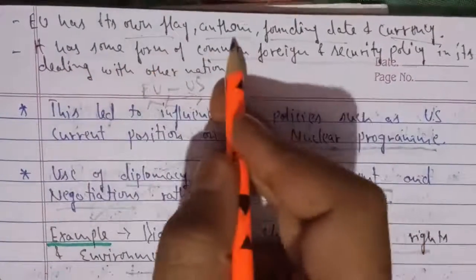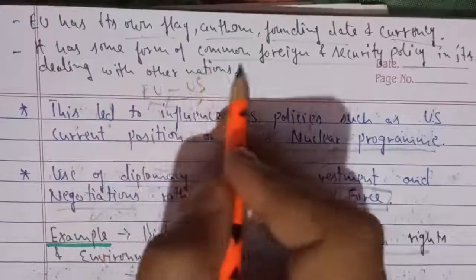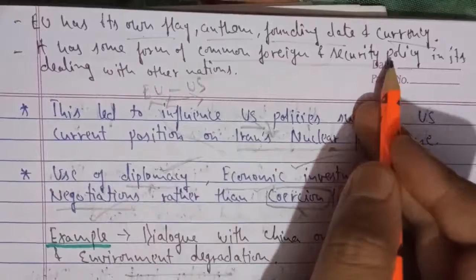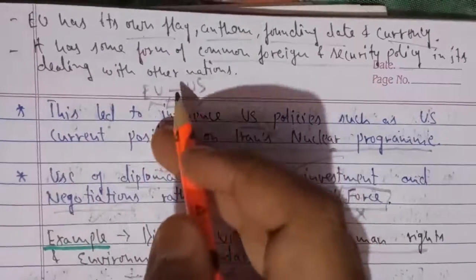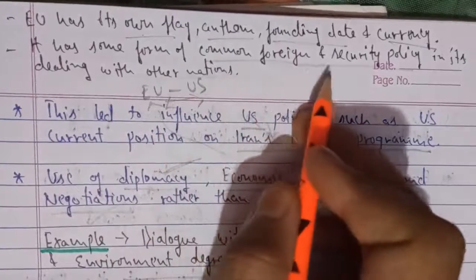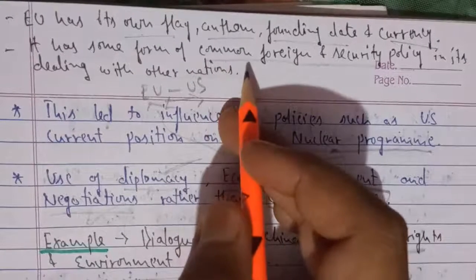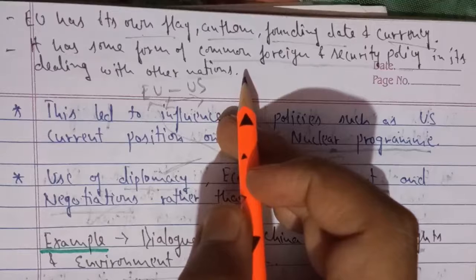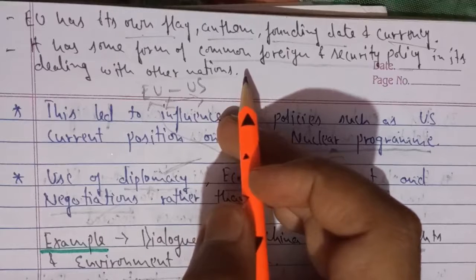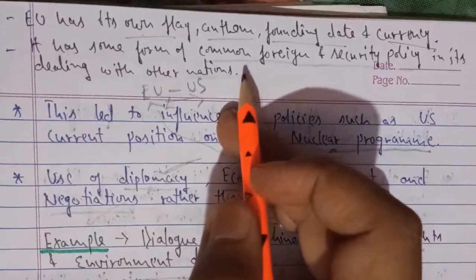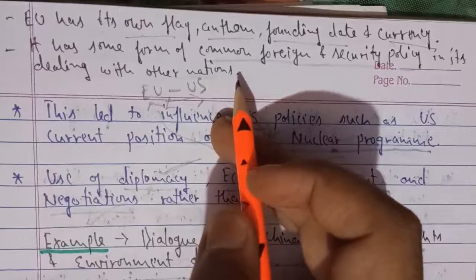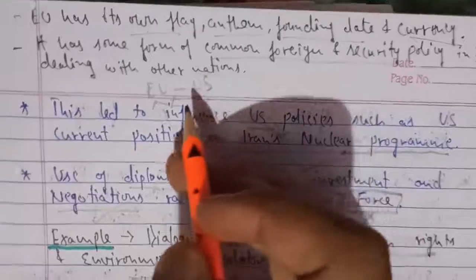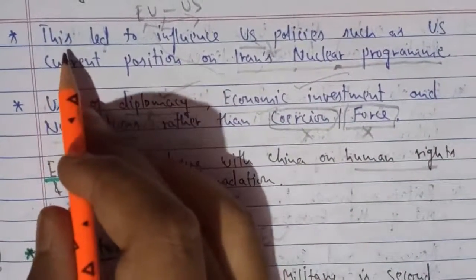The European Union has its own flag, anthem, founding date, and currencies. All its members follow common foreign policies, common security policies, and common defense policies in dealing with other nations. This unity makes the EU very powerful politically and allows it to challenge US dominance — not through direct physical war, but in terms of economic, military, and technological influence at the world level.